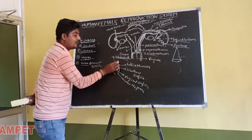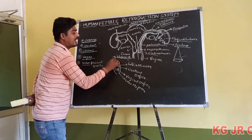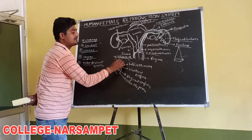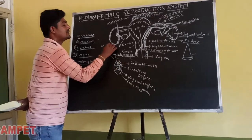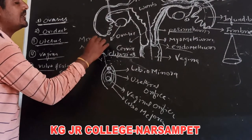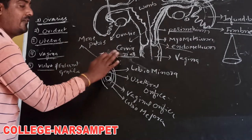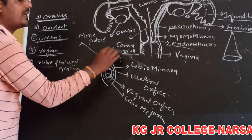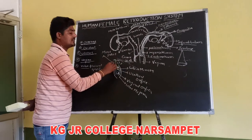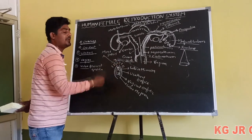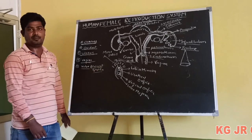Above the labia majora, a cushion-like fatty tissue is present called the mons pubis. This fatty tissue is covered by skin, and the skin also possesses many hairs. This covers the external genitalia of the female.